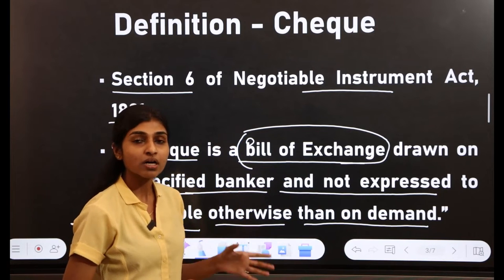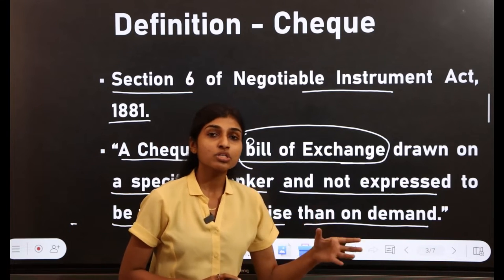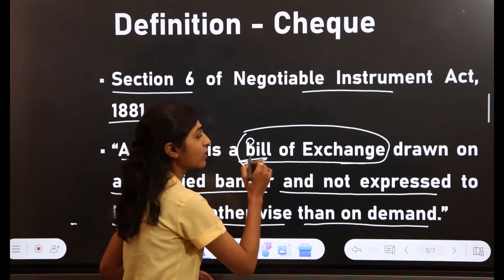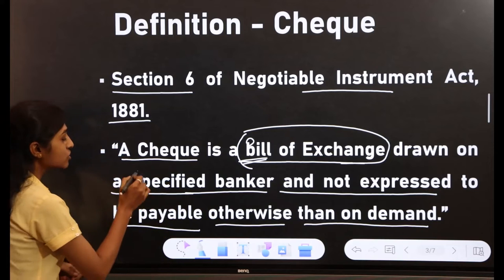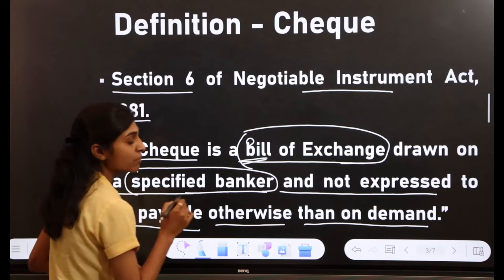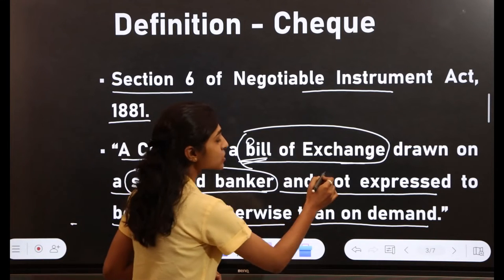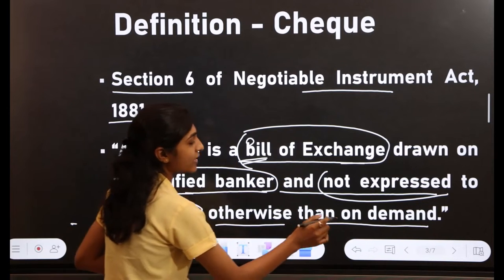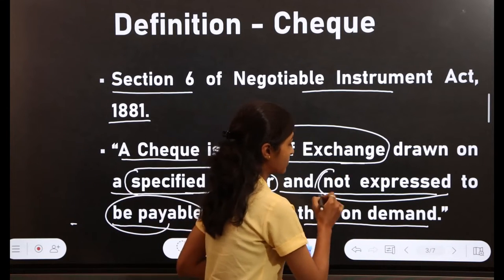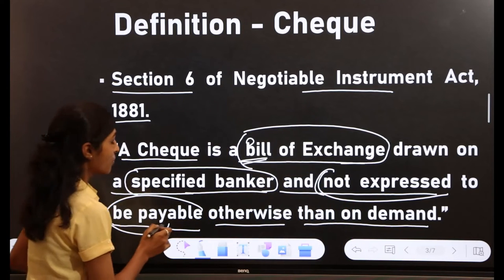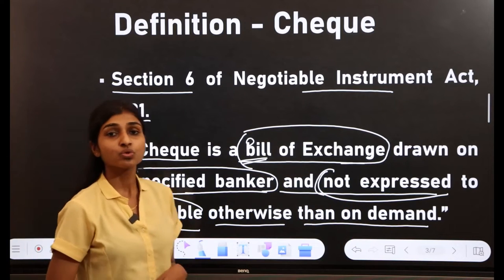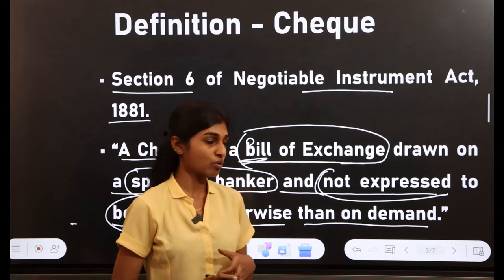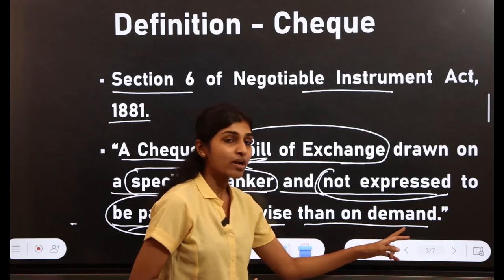A bill of exchange is an unconditional order signed by the maker — it is a direction to pay a certain sum of money to a certain person. The check is drawn on a specified banker and is payable on demand, meaning it cannot be paid until you present the check at the bank.